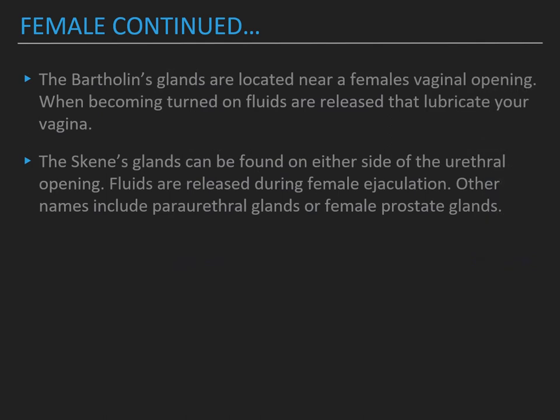The Bartholin's glands are located near the female's vaginal opening. When becoming aroused, fluids are released that lubricate the vagina. The Skene's glands can be found on either side of the urethral opening. Fluids are released during female ejaculation; they are also known as the periurethral glands or female prostate glands. This still came from Planned Parenthood.